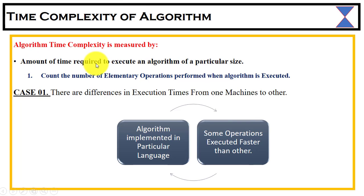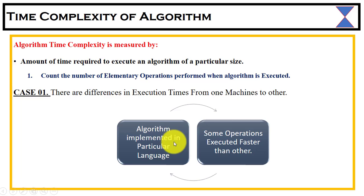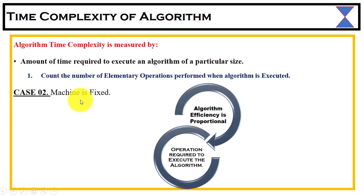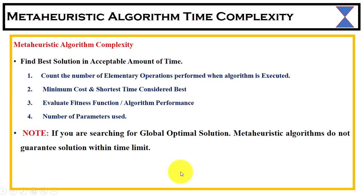How we can measure the time complexity for any algorithm: that is the amount of time required to execute an algorithm of a particular size. We can count the number of elementary operations performed when the algorithm is executed. One consideration is that there are differences in execution time from one machine to another — an algorithm executed on a particular machine may have some operations run faster than others. When the machine is fixed, algorithm efficiency is proportional to the operations required.